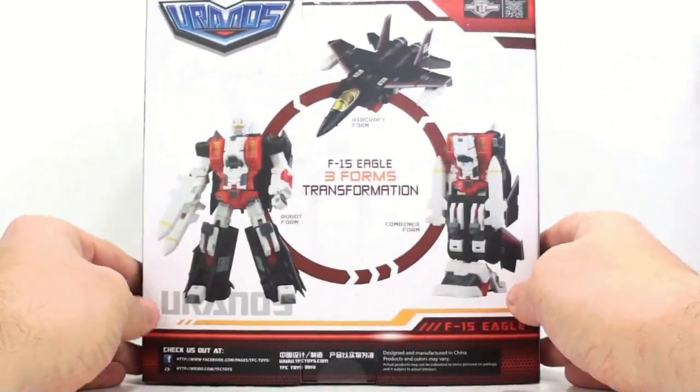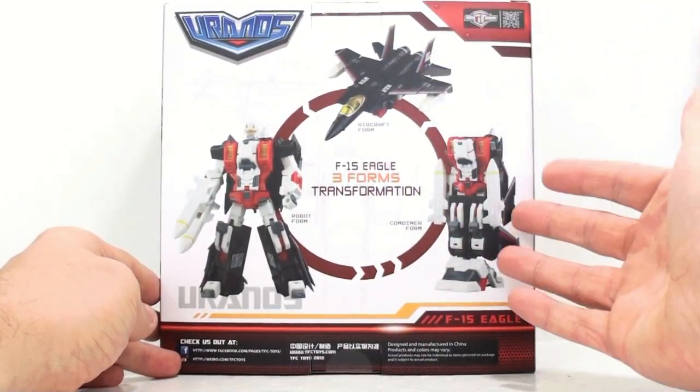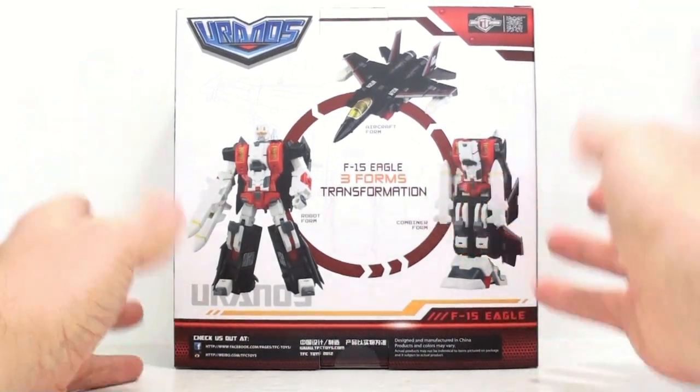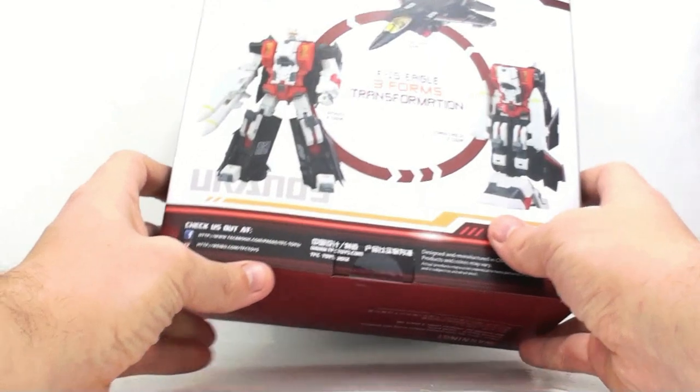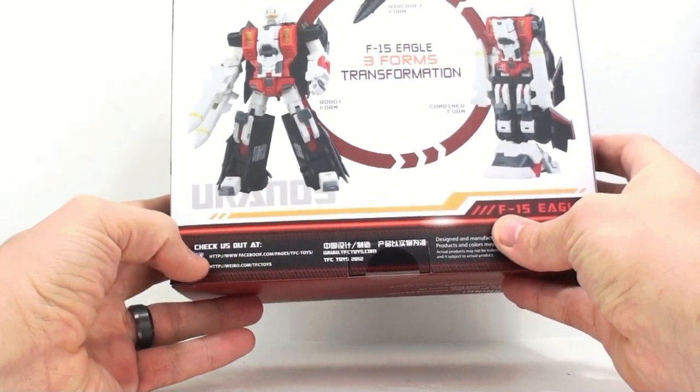Coming around to the actual back of him, you see his robot form, his aircraft form, and of course, his combiner form. He makes the right leg, typically, of what otherwise would be known as Superion. They have a couple things right here. You got a Facebook page, you got a website, you can check TFC toys out there.